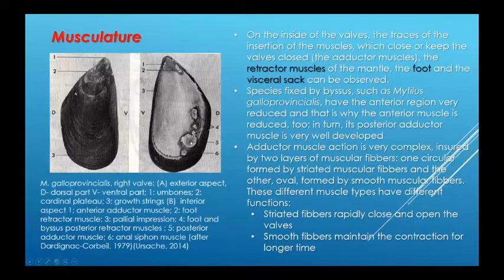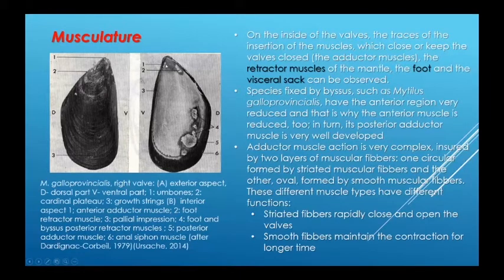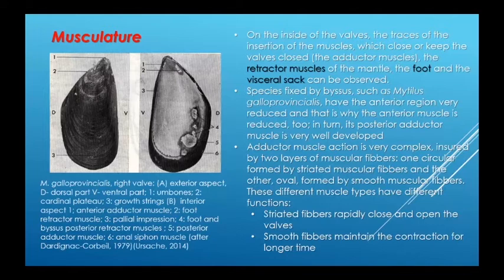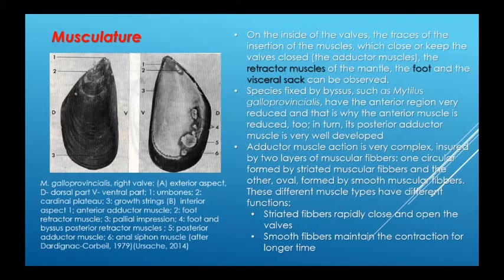On the inside of the valves, the traces of insertion of the muscles — which close or keep the valves closed — the retractor muscles of the mantle, the foot, and the visceral sac can be observed. Species fixed by byssus, such as Mytilus galloprovincialis, have the anterior region very reduced, which is why the anterior adductor muscle is also reduced. The posterior adductor muscle, however, is very well developed. Adductor muscle action is very complex, ensured by two layers of muscular fibers — one circular layer formed by striated fibers and the other oval layer formed by smooth fibers. Striated fibers rapidly close and open the valves, while smooth fibers maintain the contraction for longer time.